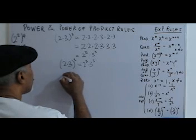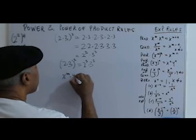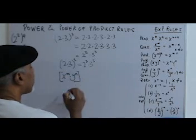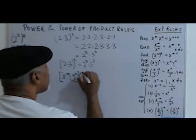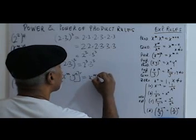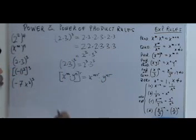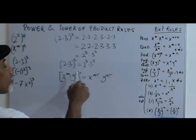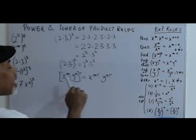Let's make it more general. If we have x to the m multiplying y to the n, where m and n are natural numbers, and we're raising that to the r power where r is some other natural number, this is just going to be x to the m times r times y to the n times r. No matter what the first or second factor is, we raise each factor to the outside power and multiply those results together.